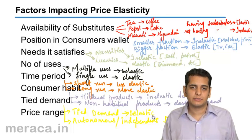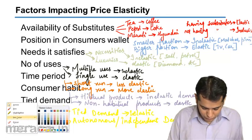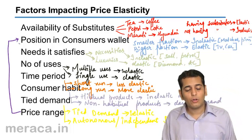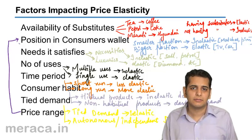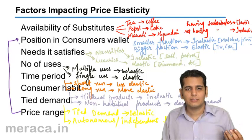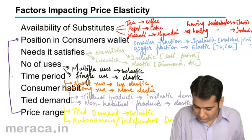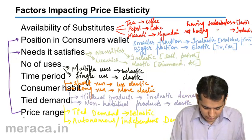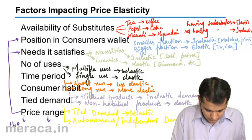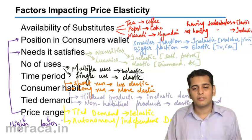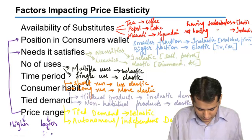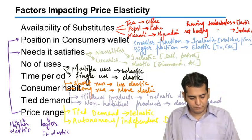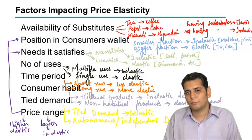Next point is price range. Costly products will have elastic demand. If products fall into a higher price range, the demand for them would be elastic. But if the products fall into a smaller price range, the demand for them is inelastic. This brings us to the end of the topic price elasticity. Thank you.